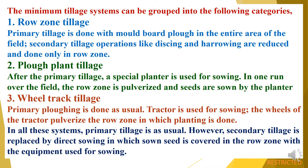Minimum tillage can be grouped into three categories. First, row zone tillage: primary tillage is done with a moldboard plough over the entire field, while secondary tillage operations like dressing and rowing are reduced and done only in the row zone. Second, plough plant tillage: after primary tillage, a special planter is used for sowing — in one run over the field, the row zone is pulverized and seeds are sown. Third, wheel track tillage: primary ploughing is done as usual and the wheels of the tractor pulverize the row zone in which planting is done. In all these systems, primary tillage is essential; however, secondary tillage is replaced by direct sowing in which the seed is covered in the row zone.